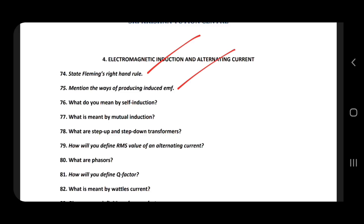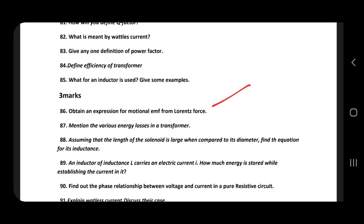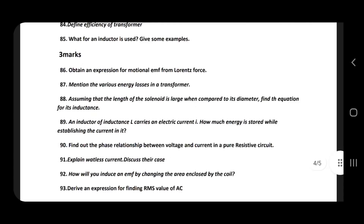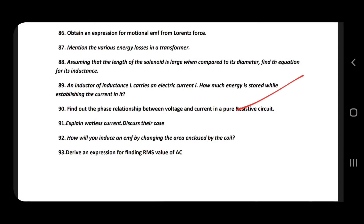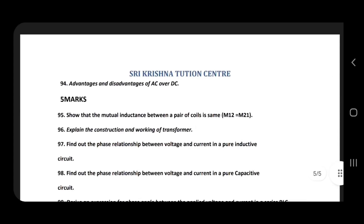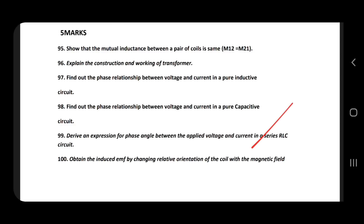Right-hand rule. What is meant by self-inductance and mutual inductance, step-up and step-down transformer, RMS value, phasor, quality factor, wattless current, power factor. Definition of transformer and efficiency of transformer. Motional EMF from Lorentz force — important. Various energy losses in transformer — very very important. Relationship between pure resistive and RLC circuits. Wattless current, area enclosed by coil, derivation, RMS value, advantages and disadvantages of AC over DC — very very important. Transformer working, inductive reactance, RLC orientation of coil — very important.